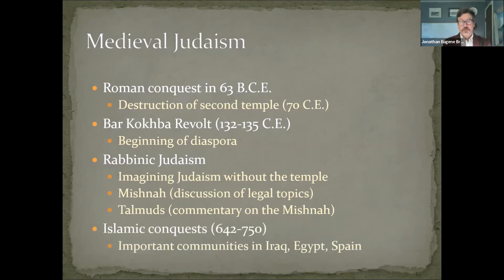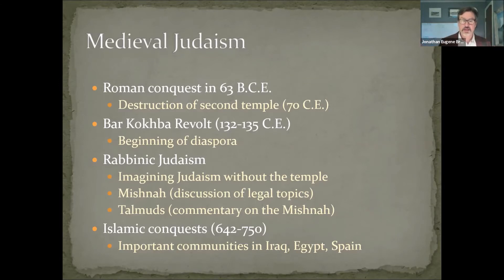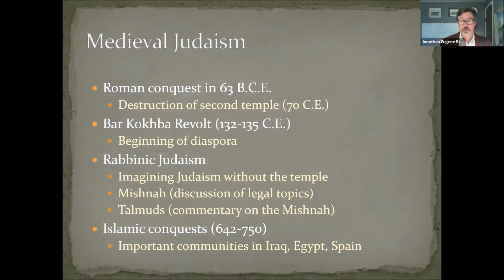The Islamic conquests, which we'll be talking about in much more detail on Thursday, really begin around 642 and stretch all the way to 750. This takes over territory where many Jews lived, and communities of Jews in Iraq, Egypt, and Spain all continue to flourish under the Muslim empire. This may be a surprise to some of you who think that Muslims and Jews have always hated one another — this really is not the case. Judaism continues to flourish under the rule of Islam, and in fact, the language of Judaism becomes Arabic.